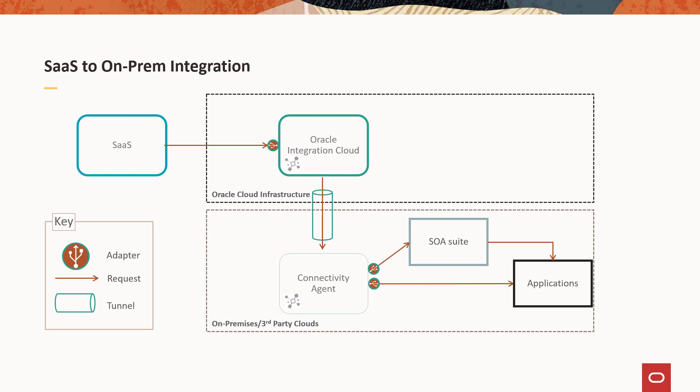The first pattern is on-prem integration. In order to access on-prem systems — or those could be systems in another cloud such as AWS, virtual compute networks in OCI, Azure, Google Cloud, or Ali Cloud — if they're on a private network, they will have private non-routable IP addresses. To access those systems, we use the connectivity agent. It's a small 140 MB download that connects back to Oracle Integration Cloud using HTTPS, so standard punch-through a corporate firewall.